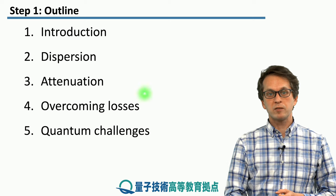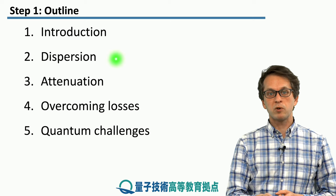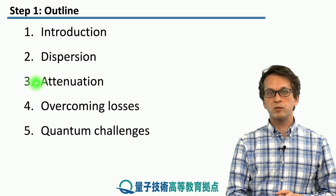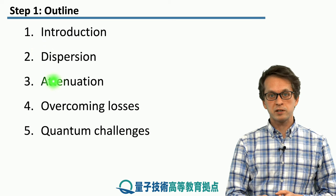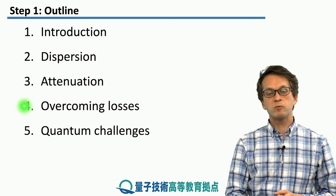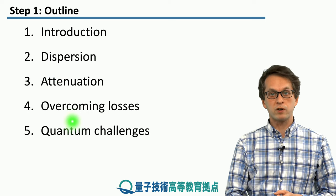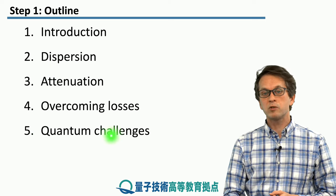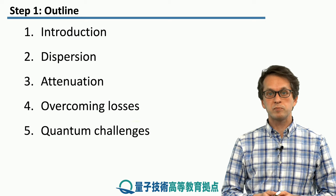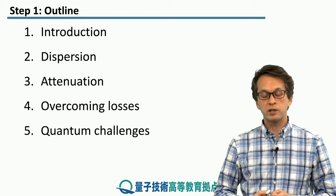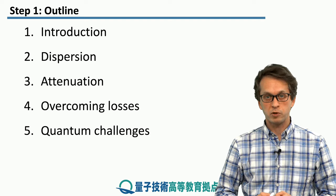In this lesson, we will first, in step two, talk about dispersion in optical fibers. Then we will consider the other sources of attenuation. Then we will move on to overcoming these losses. And finally, we will consider what these sources of loss present in terms of challenges in the context of quantum communication.